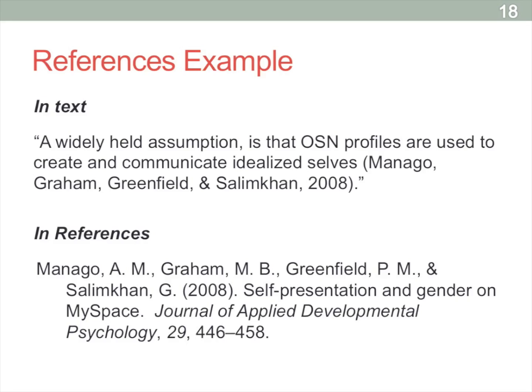This is followed by the title of the article, Self-Presentation in Gender on MySpace. The journal in which it was published is going to be italicized here, Journal of Applied Developmental Psychology. The issue number, 29, is also going to be italicized, and then they'll give the specific page numbers where you can find it. So this article was from page 446 to 458, so about a 12-page article there listed in that journal.